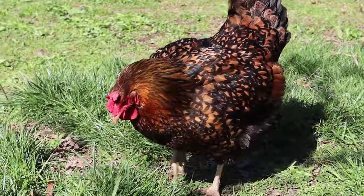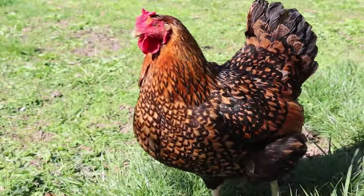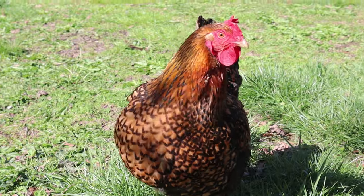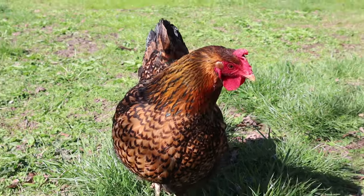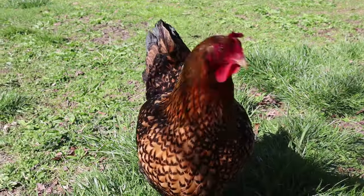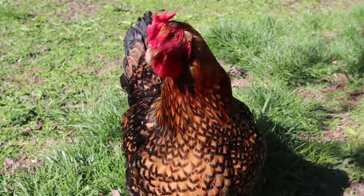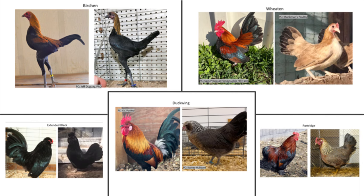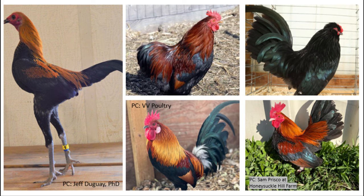Otherwise, every other gene enhances, dilutes, or changes the distribution of the black and red. With that, let's move on to the different phenotypes and genetics of the different E-Alleles. The E-Alleles control the distribution of black and red on chickens; however, phenotypically, these differences are best noted in females as opposed to males.